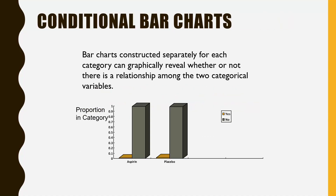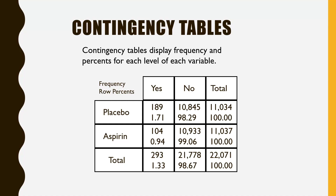The graphical display for comparing a categorical explanatory variable with a categorical response variable is a side-by-side bar graph. Here it's shown as a three-dimensional bar graph, but it's not very telling because the bars are small — heart attacks are thankfully relatively rare. Looking at the bar graph, the placebo bar appears just slightly higher in the 'yes' category than aspirin. Let's dig into the descriptive statistics to see what they look like.